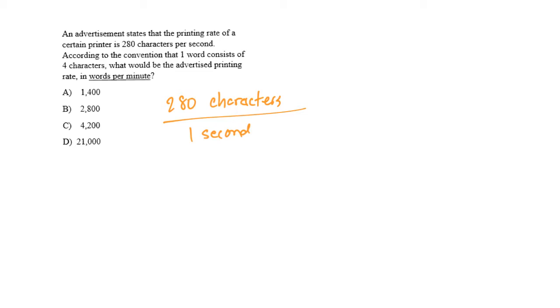It says according to the convention that one word consists of four characters, and so that's how I'm going to get from my current unit of characters to the unit that I want, which is a unit of words. I notice that I have characters in the numerator of this fraction, and so in order to cancel characters, characters needs to go in the bottom or in the denominator of my next fraction.